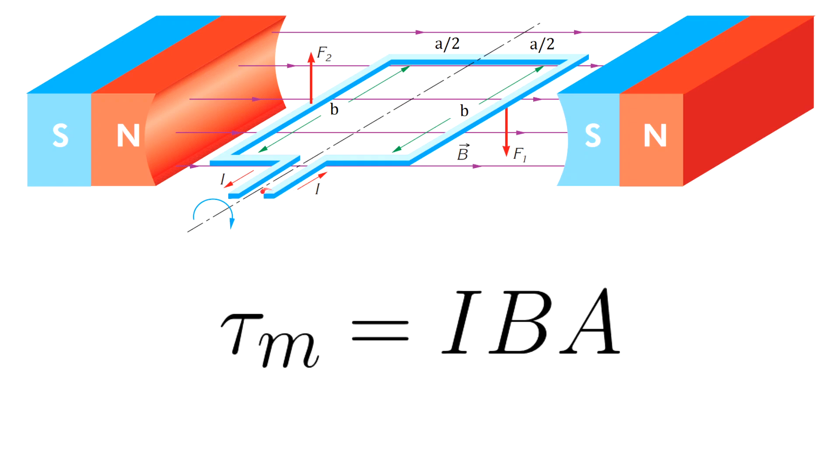The stronger the magnet, the faster the motor. But this equation can be used only when the plane of the loop is parallel to the magnetic field lines. By this equation, you can only find the maximum torque exerted on a single turn loop.